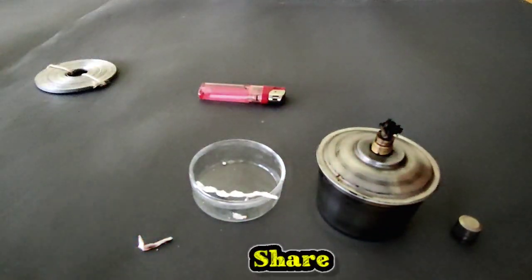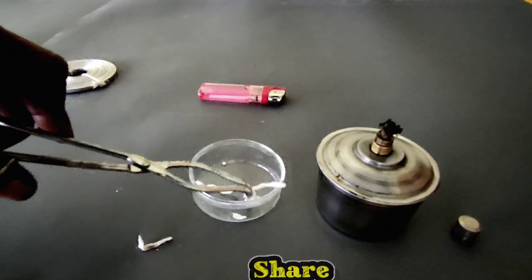You see that the white powder falls down in the petri dish.